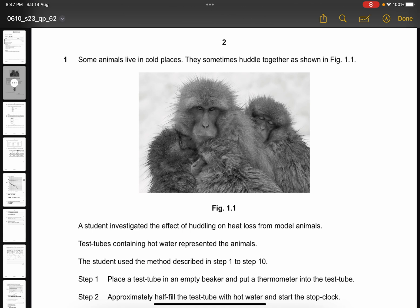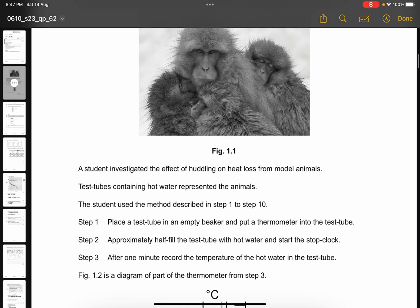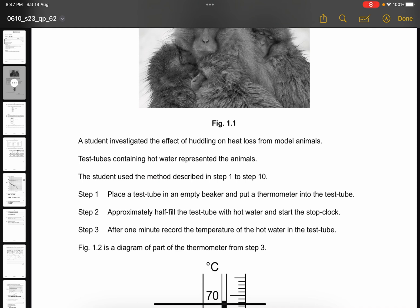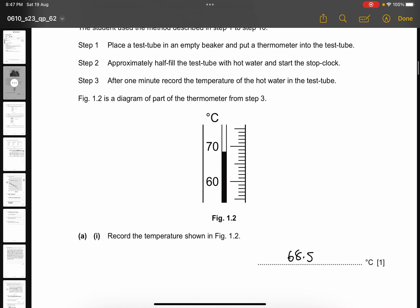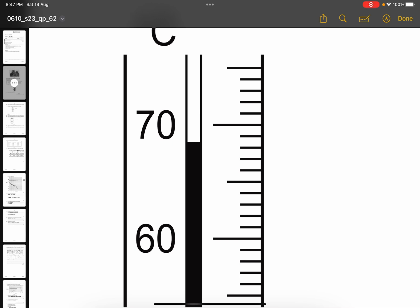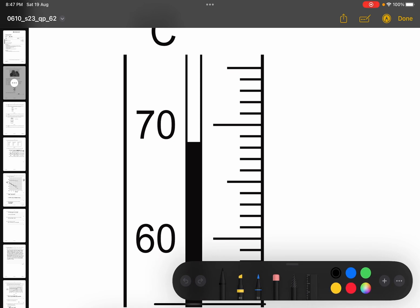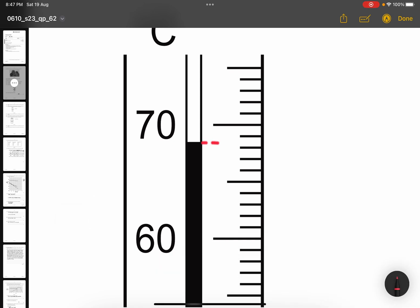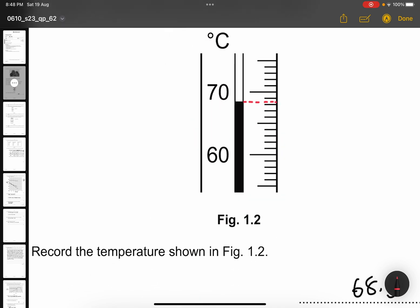Question 1. Some animals live in cold places. They sometimes huddle together as shown in figure 1.1. A student investigated the effect of huddling on heat loss from model animals. Test tube containing hot water represented the animals. The student used the method described in step 1 to step 10. Step 1, place a test tube in an empty beaker and put a thermometer into the test tube. Step 2, approximately half fill the test tube with hot water and start the stop clock. Step 3, after 1 minute, record the temperature of the hot water in the test tube. Figure 1.2 is a diagram part of the thermometer from step 3. Record the temperature shown in figure 1.2. The answer here is 68.5 degrees as you can see from here. It's 68.5 because it's hitting here.